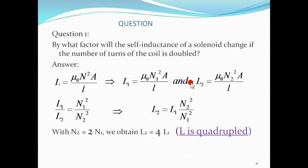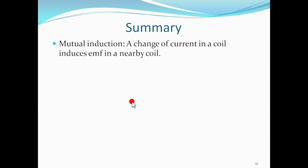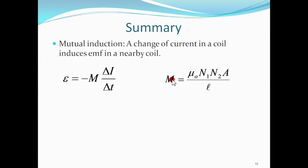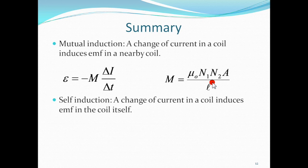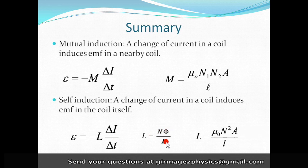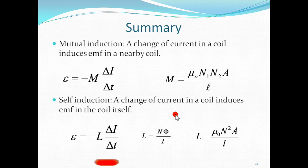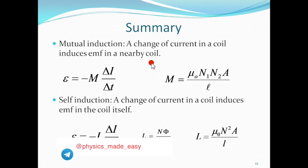To summarize: mutual induction is a process in which change of current in a coil induces EMF in a nearby coil, given by e equals M times delta I over delta t, where M is the mutual inductance and depends on the geometry of the coils. Self-induction is a process in which the change of current in a coil induces EMF in the coil itself; here e equals L times delta I over delta t, and L equals N·phi over I, or L equals mu-naught n-squared A over l. In the next video we will learn about properties of AC circuits.